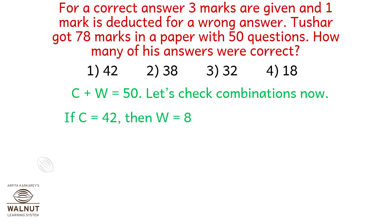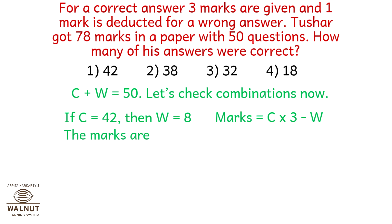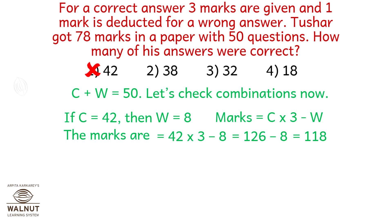If C is 42, that is checking option 1, then W is 8. Marks equal C into 3 minus W. The marks are 42 into 3 minus 8, which is 118. So option number 1 is wrong.